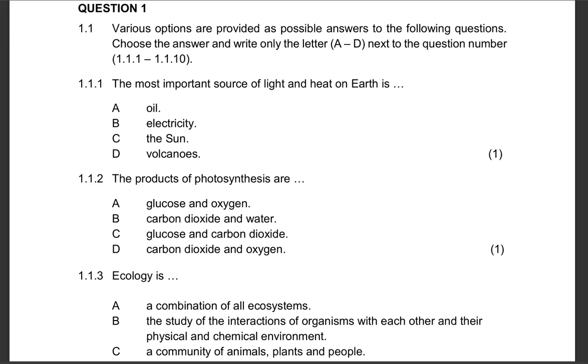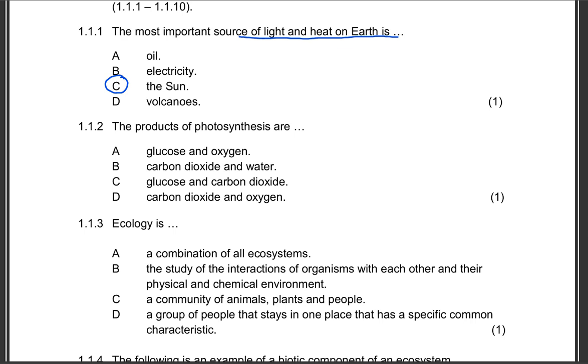Question 1.1.1: The most important source of light and heat on earth is what? Is it oil, electricity, the sun, or volcanoes? The correct answer we know is the sun. The most important source of light and heat on earth is definitely the sun, because we receive light from the sun, we also receive heat. So that's light energy, heat energy, and we use radiant energy also for photosynthesis.